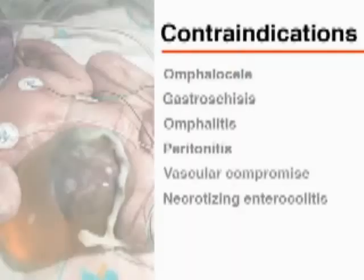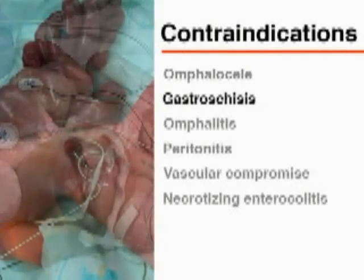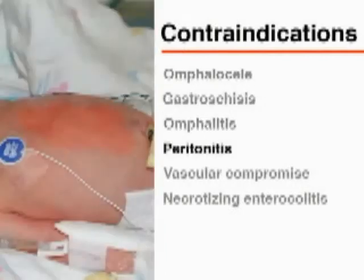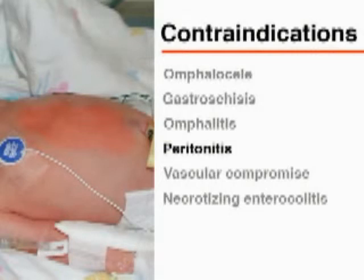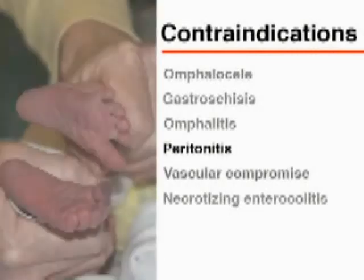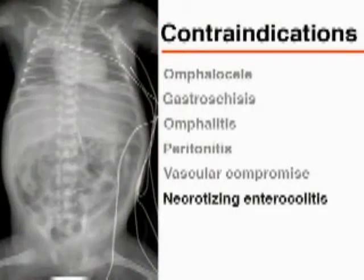The contraindications are similar for both vessels and include omphalocele, gastroschisis, omphalitis, and peritonitis. In umbilical artery catheterization, evidence of vascular compromise in the lower limbs or buttocks, and necrotizing enterocolitis are considered additional relative contraindications.